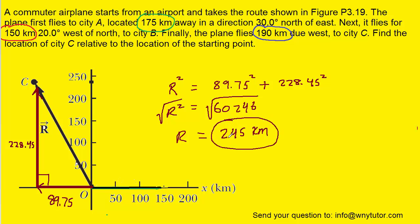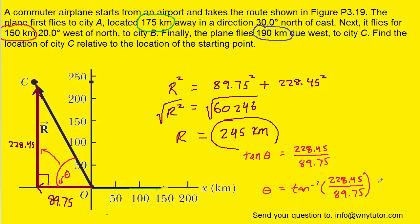The question also wants the direction, which can be expressed in a number of ways. One way is to find the angle within the right triangle, which we call theta. That angle can be found using tangent, since we have both the opposite side and the adjacent. So tangent of theta equals the opposite side of 228.45 divided by the adjacent of 89.75. Taking the inverse tangent of that fraction gives approximately 68.6 degrees. We must be careful how we phrase this, given the question uses terms like west of north and north of east.